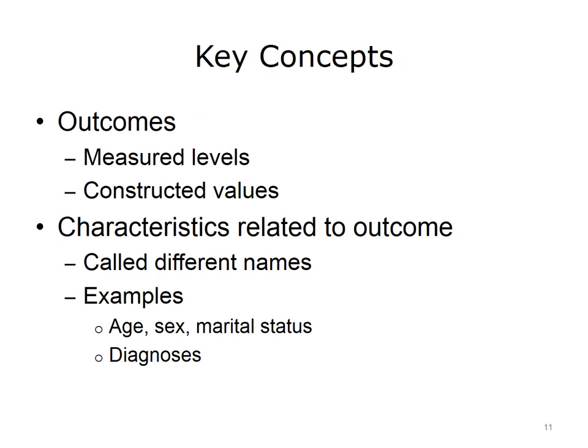Risk adjustment and predictive modeling share several key concepts. First, both are concerned with outcomes. The outcomes can be measured levels, such as cost or blood pressure, or constructed values, such as whether a patient has been readmitted after an initial stay in the hospital. When designing a risk adjustment or predictive model, costs, also known as expenditures, are measured continuously from zero to any total amount. Other outcomes, like readmission, mortality, or complications, are events simply measured with a yes or no and are typically coded as a one or a zero in the data.